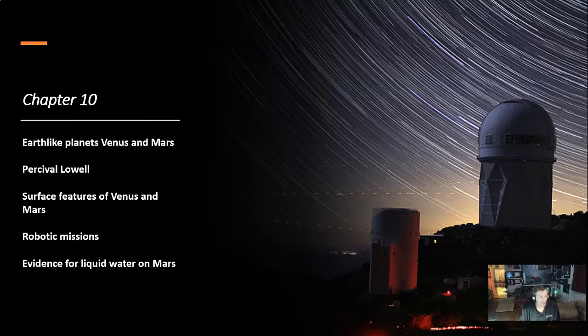Chapter 10 looks at Earth-like planets, Venus and Mars, Percival Lowell, Surface Features of Venus and Mars, Robotic Missions, and Evidence for Liquid Water on Mars.